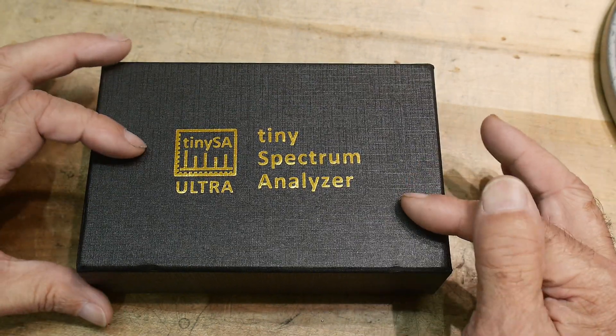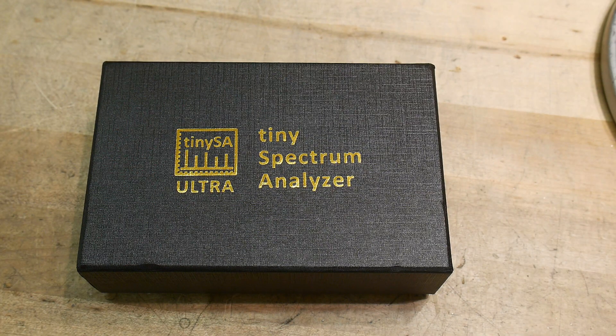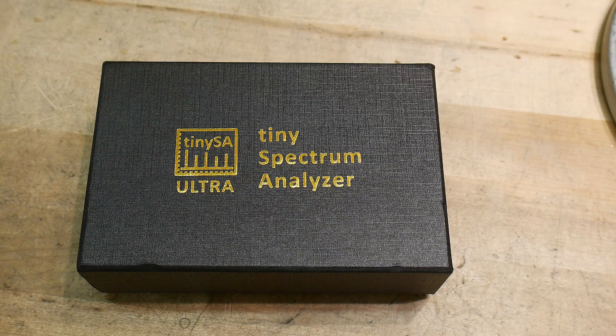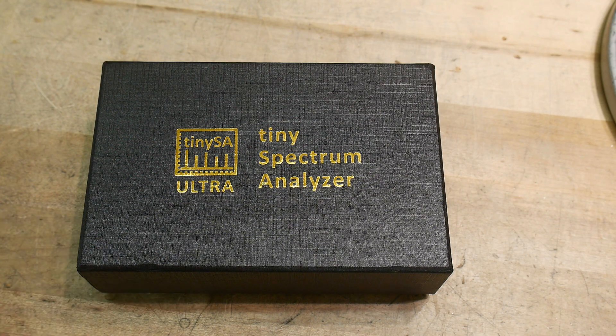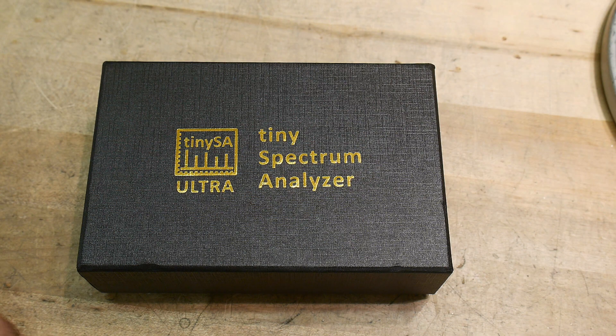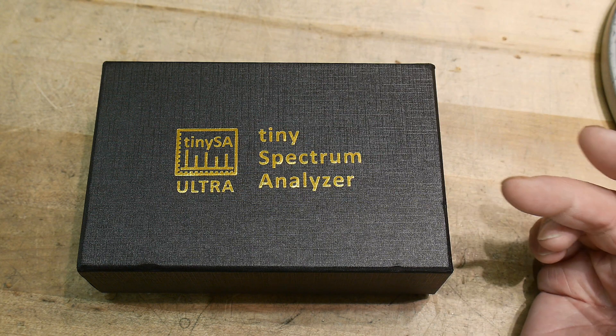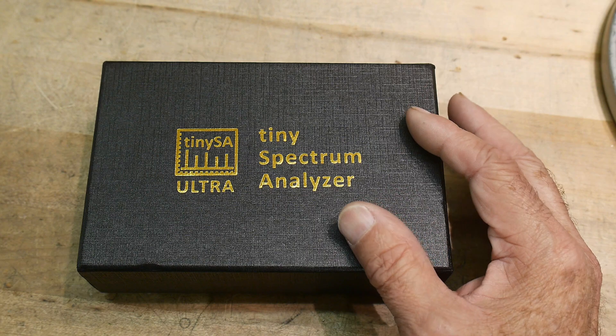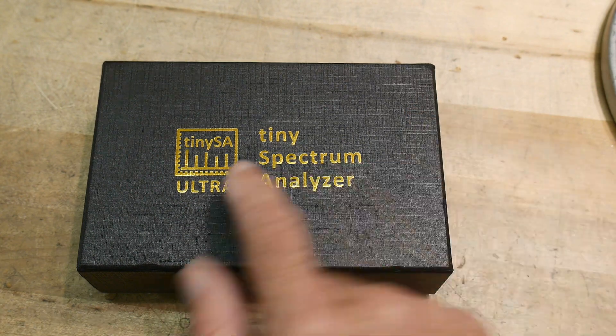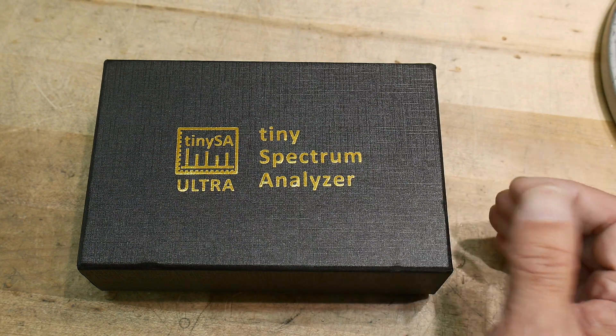Let me look at the specifications. 100 kilohertz to 800 megahertz in normal mode. The other one was something like 10 kilohertz to 350 megahertz, so this one's more than twice as fast. Then there's ultra mode which takes you up to 6 gigahertz.